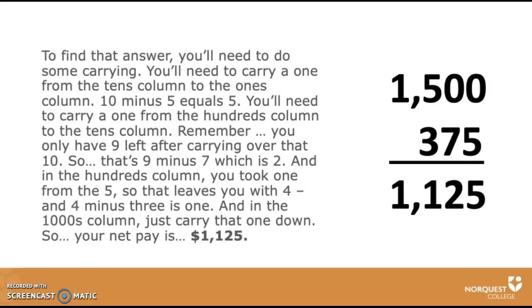To find that answer, you'll need to do some carrying. Carry a 1 from the tens column to the ones column. 10 minus 5 equals 5. Then carry a 1 from the hundreds column to the tens column. You only have 9 left after carrying over that 10, so that's 9 minus 7, which is 2. In the hundreds column, you took 1 from the 5, so that leaves you with 4. And 4 minus 3 is 1. In the thousands column, just carry that one down. So your net pay is $1,125.